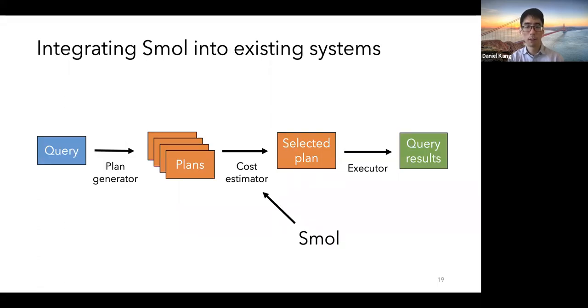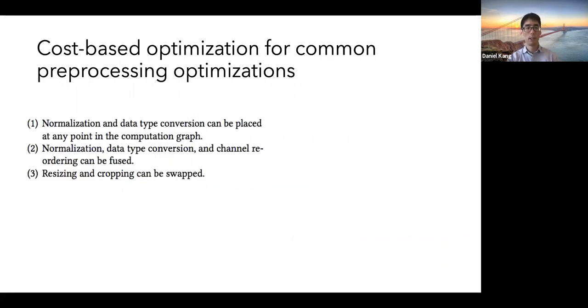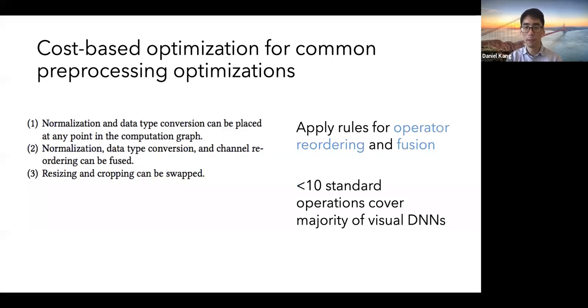So now to describe how to integrate Smol into cost estimation of these existing systems, I'll describe how Smol can be incorporated into the executor of prior systems as well. I'll describe how to jointly optimize pre-processing and inference. The first thing we do to jointly optimize pre-processing and inference is we use cost-based optimization for common pre-processing operations. They're essentially a set of rules which we can use to rewrite pre-processing optimizations, basically operator reordering and fusion. And because there's approximately fewer than 10 standard pre-processing operations that cover the majority of visual DNNs, this covers the space of most pre-processing operations for visual analytics.